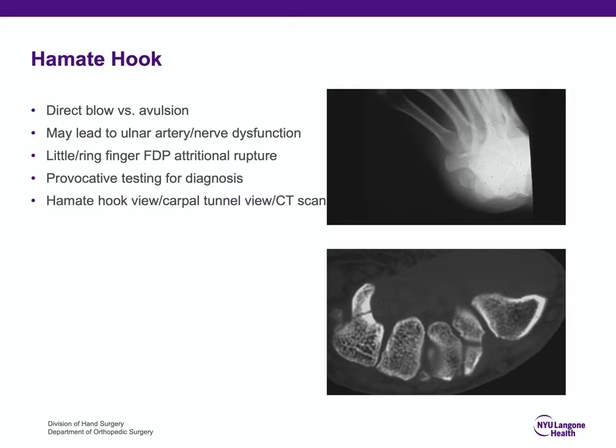Hamate hooks are generally not seen on standard PA, oblique, and lateral radiographs. When you have a high index of suspicion for a hamate hook fracture, additional diagnostic imaging is required. This could be the hamate hook view or a CT scan, which is the gold standard for hamate hook fracture evaluation.